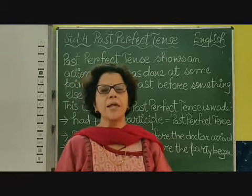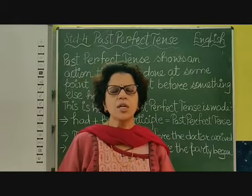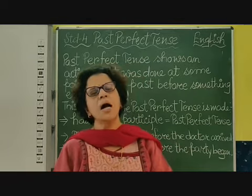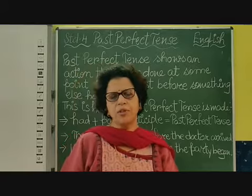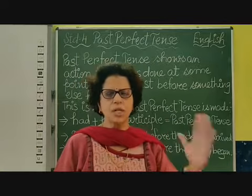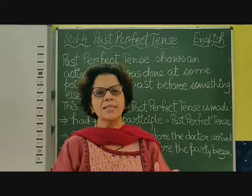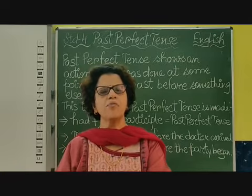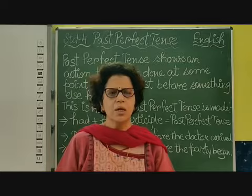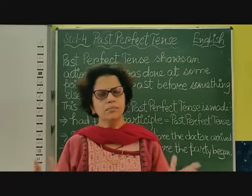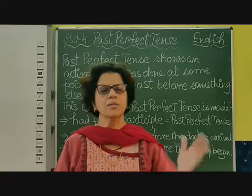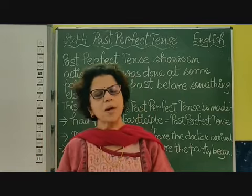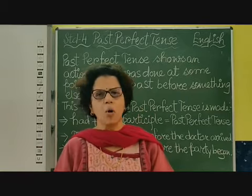We have studied that in present perfect tense, for singular subject we use 'has' and then the past participle form of the verb and then the object. So: subject plus has, for singular subject, then the past participle form of the verb, and then the object. For plural subject: subject plus have, then the past participle form of the verb, and then the object.